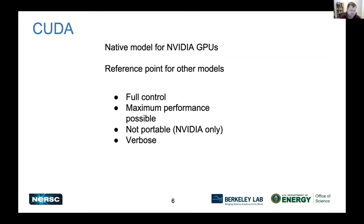In terms of pros and cons: the obvious pro is that CUDA is co-designed with NVIDIA's hardware, so you get full control and direct access to essentially every feature of an NVIDIA GPU. Being that close to the hardware also typically means you can achieve maximum possible performance — though there may be a large amount of tuning required for things like launch parameters to actually achieve that. The downsides are it's obviously not portable, and the code itself can be more verbose than some other options.